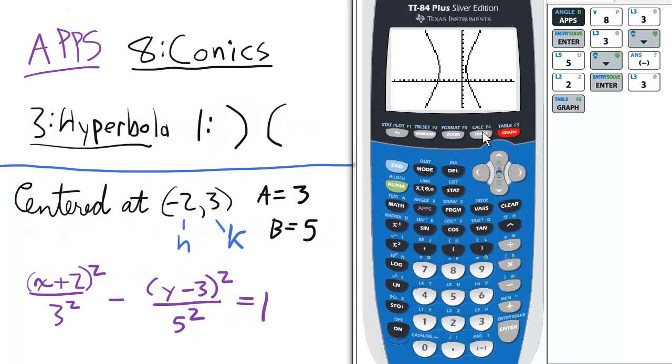Now we can press trace, and we can scroll along the right portion of this conic section, and see where the points are. And then we can jump to the other portion, the left side of this, by pressing the up arrow key, and tracing along, just going left and right or up and down.